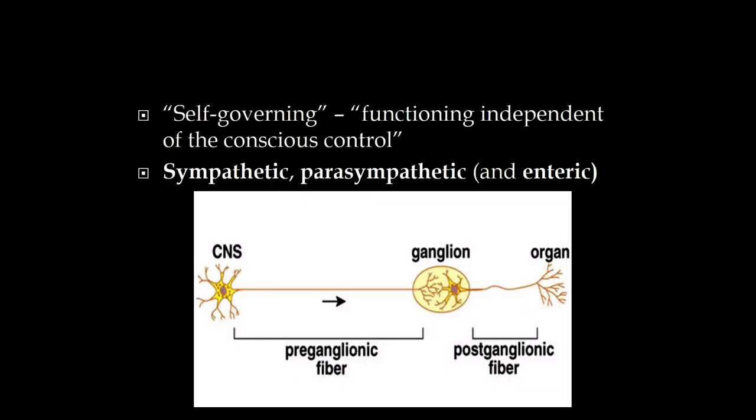This last of three lectures is on the autonomic nervous system. We'll be talking a lot about acetylcholine and other neurotransmitters. The anatomy of the autonomic nervous system has already been covered, so we'll focus here on the function of the autonomic nervous system, which means self-governing or functioning independent of conscious control.